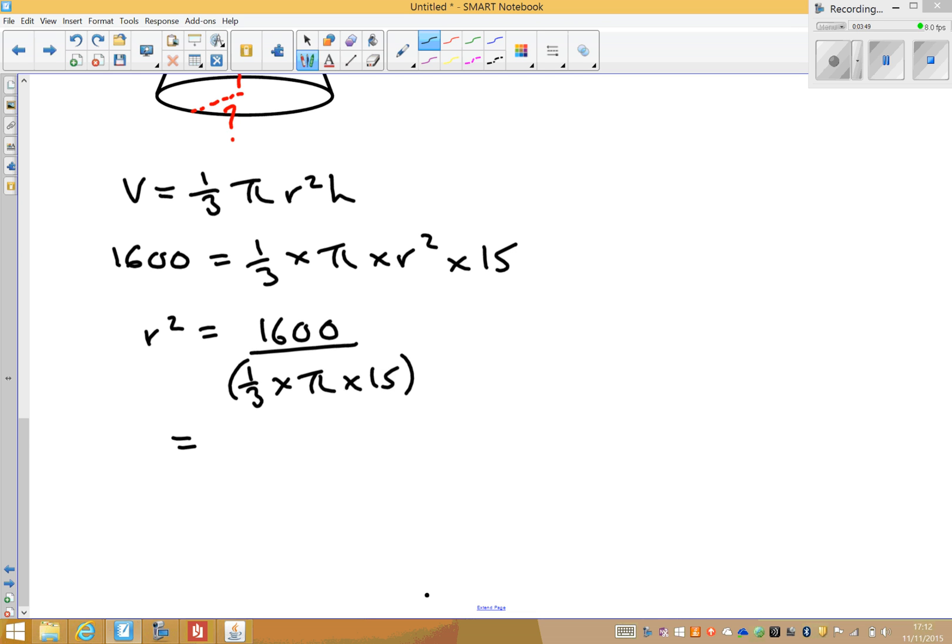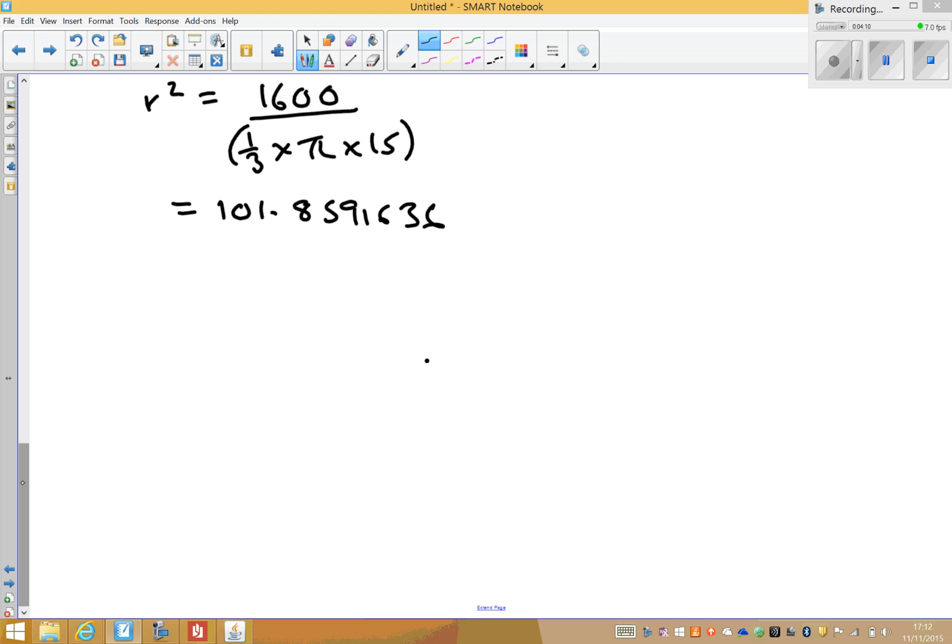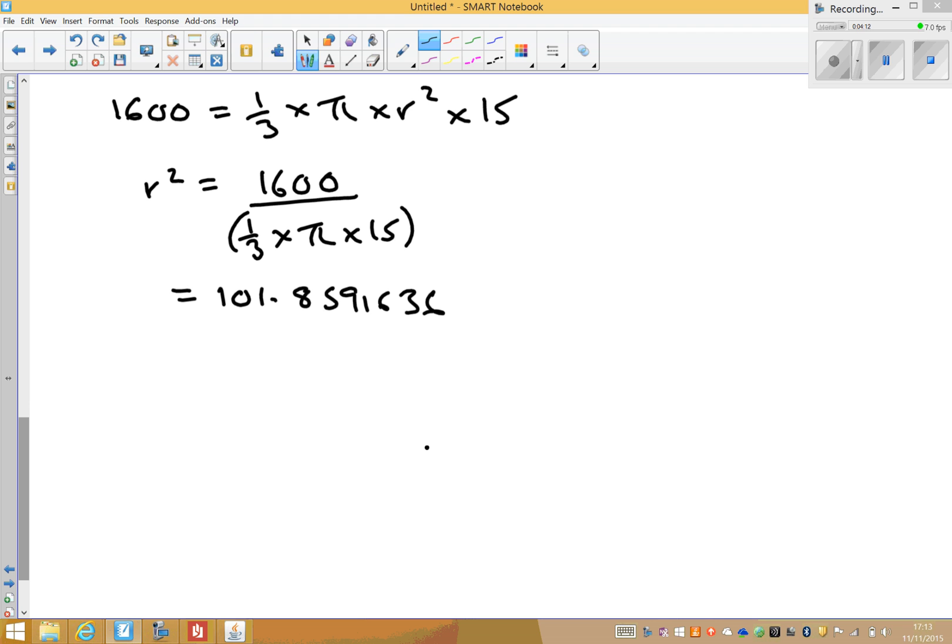Just tap that in, 1,600 divided by, making sure I use a bracket, a third times pi times 15. And on my calculator, I've got 101.8591636. Now you'll notice there's a slight difference in this example, and the difference is that this is equal to r squared.